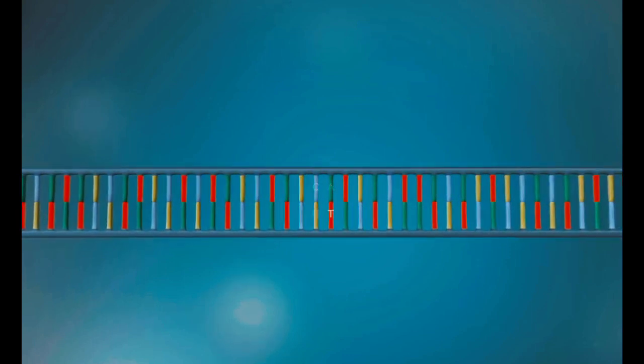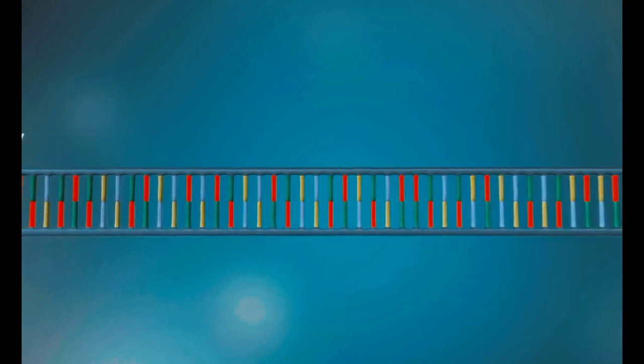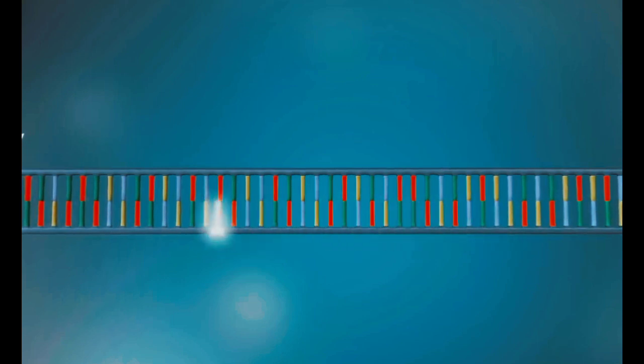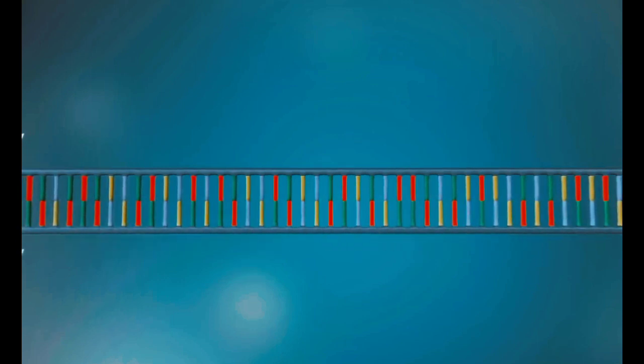Each strand has a 5' end and a 3' end. The two strands run in opposite directions. This determines how each strand of DNA is replicated.